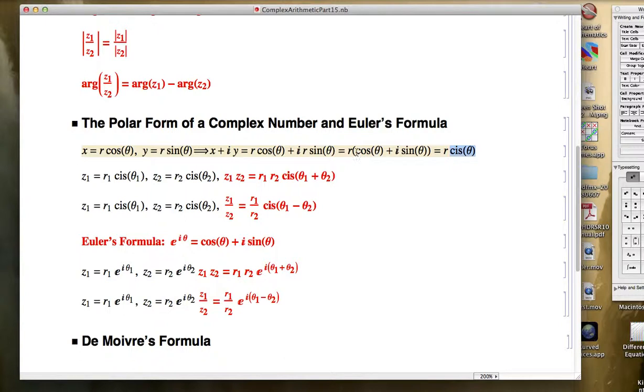We introduced something called the CIS function. As shorthand, CIS of theta represents cosine of theta plus i sine theta. It's a natural shorthand to use, CIS being the letters here: cosine, i, and sine. First letters in cosine and sine.